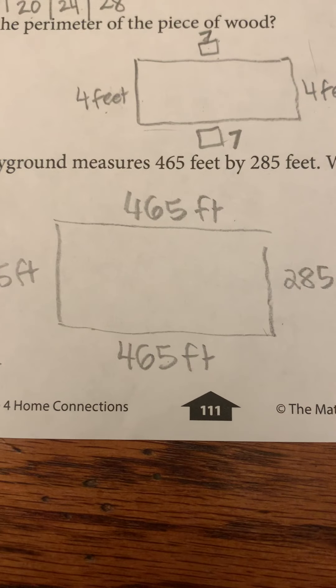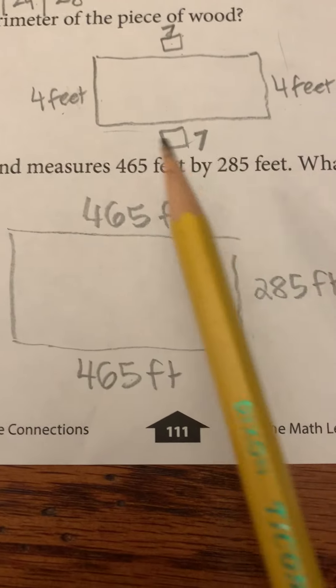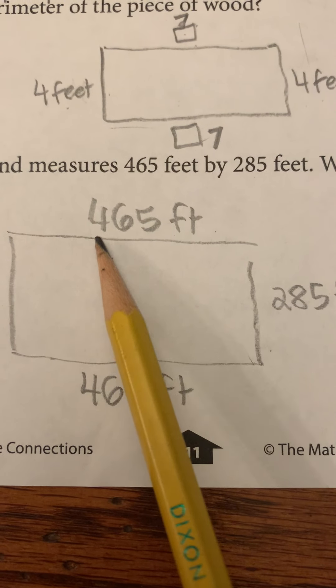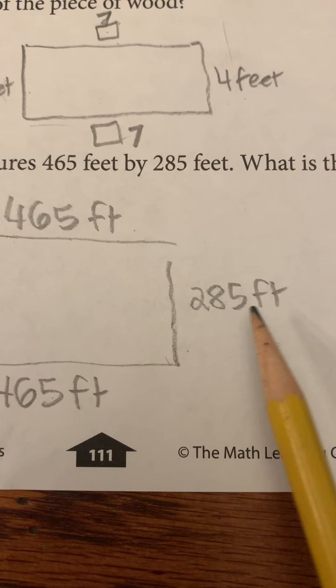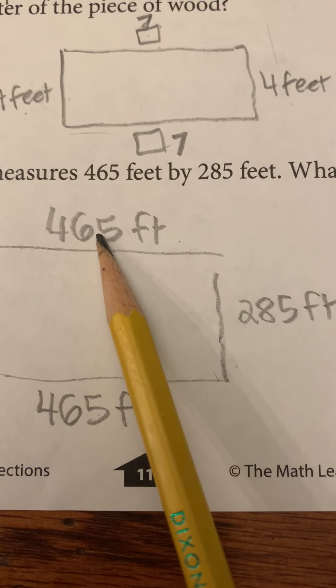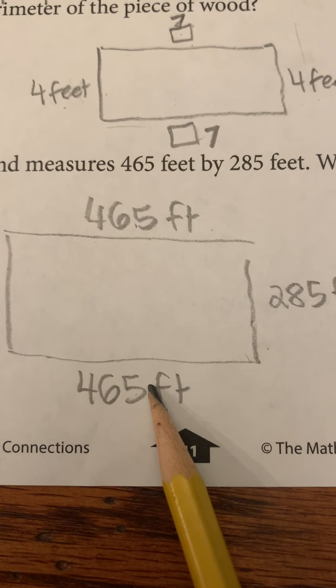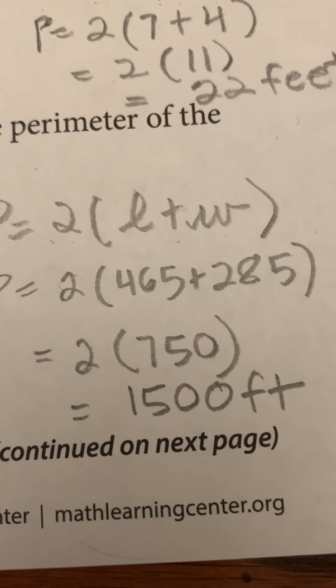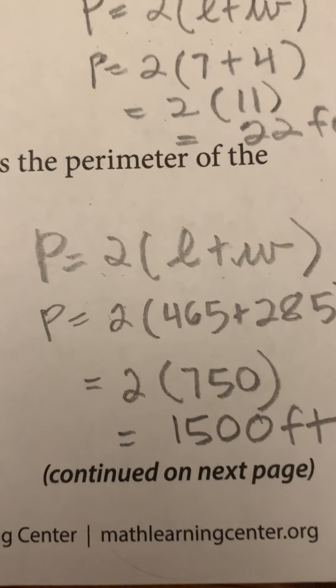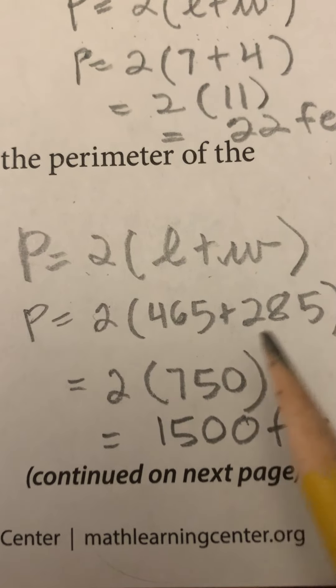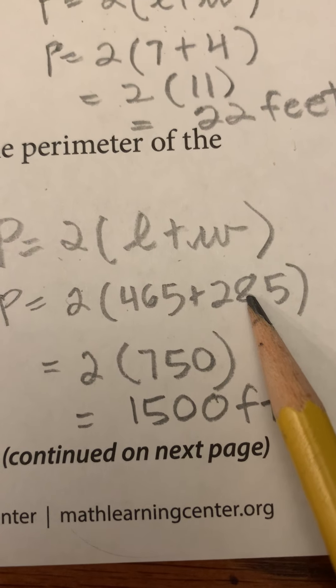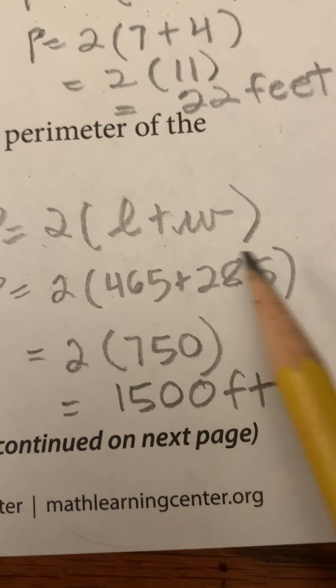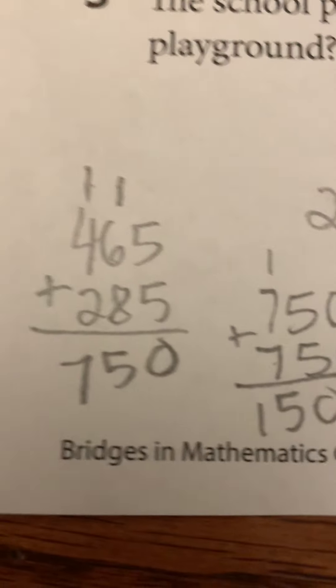The last one, we're talking about a playground and I've got 465 feet by 285 feet. This is the same size. This is the same size. I use my formula. Perimeter is two times length plus width. Here are my lengths and here my width. And when I add these two numbers up, let's see, I did over here.